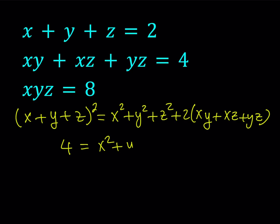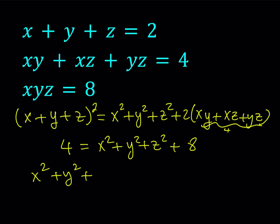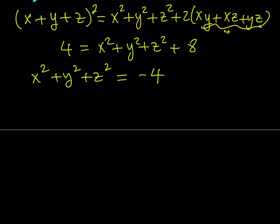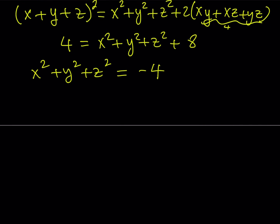So x squared plus y squared plus z squared plus... Now, xy plus xz plus yz is equal to 4. We know that. So 2 times 4 is equal to 8. We're adding an 8, which means x squared plus y squared plus z squared is supposed to be negative 4. This should come as no surprise because the sum of squares of 3 numbers can be negative if the numbers are not all real. If the numbers are real, obviously they can't have a negative sum like this.